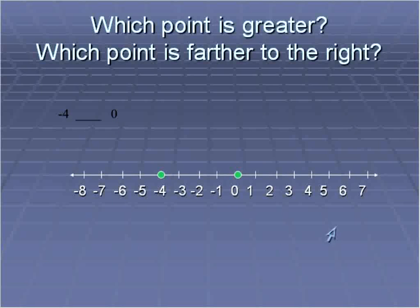But when you write it down and you put it on a number line, it becomes pretty obvious. Whichever point is farther to the right is greater. So 0 is greater than negative 4. So we would represent this: negative 4 is less than 0, with our less than symbol.